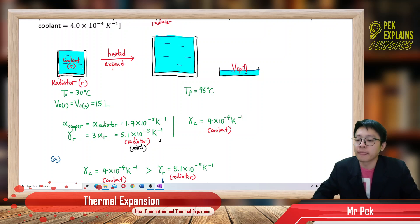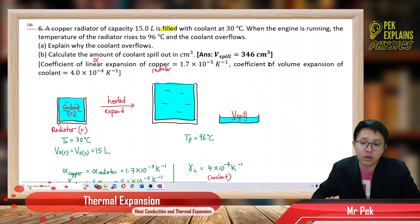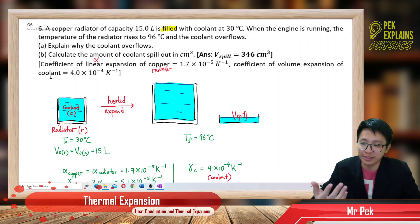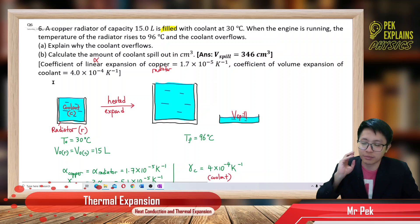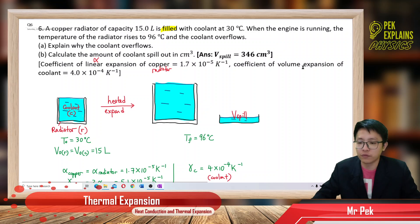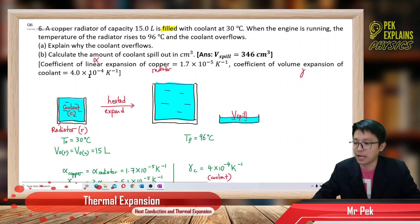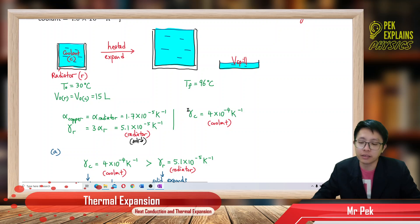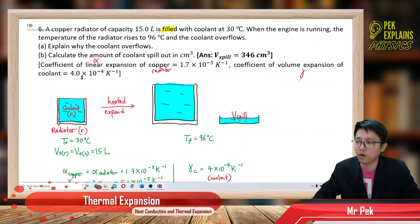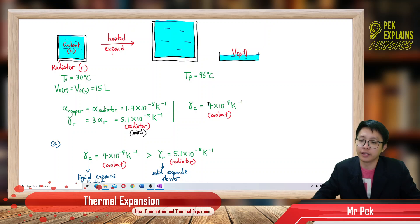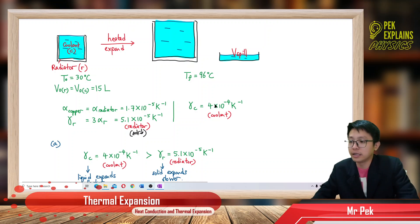The problem also gives us the coefficient of volume expansion of the coolant. The coolant is a liquid — it doesn't have length or area, only volume. So we directly use gamma for volume expansion. The gamma for the coolant is 4 × 10⁻⁴ per Kelvin. This is for the liquid.